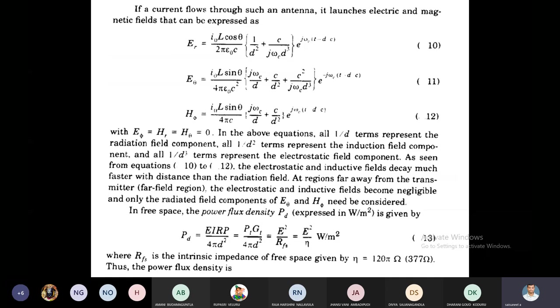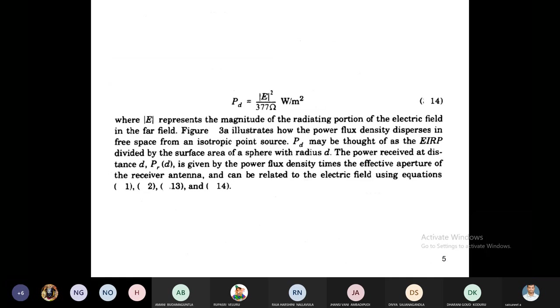What is meant by EIRP? Effective isotropic radiated power. You know the equation for EIRP which is equal to pt gt. Then substitute pt gt here. Then the power flux density which is equal to pt gt by 4πD². Then we have to modify this to E² by rfs, otherwise E² by λ. Here, what is meant by rfs? It is intrinsic impedance for free space, which is equal to η, which is equal to 120π ohm or 377 ohm. Then power flux density which is equal to |E|² divided by 377 ohm, watts per meter squared.